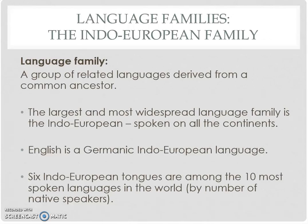So we have language families. There are really two main language families, with all kinds of sub-families branching off. If you take biology and the way things are classified, it's very similar with languages. One of the main families is called Indo-European. What we speak in the United States predominantly is a Germanic Indo-European language, and there are six Indo-European tongues.